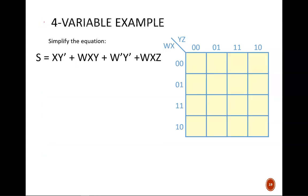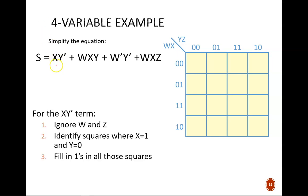Here's another example, this one with four input variables. Beginning with the XY' term, we identify squares where X equals 1 and Y equals 0. X equals 1 in these two rows, Y equals 0 in these two columns. So all four of these squares get filled in.